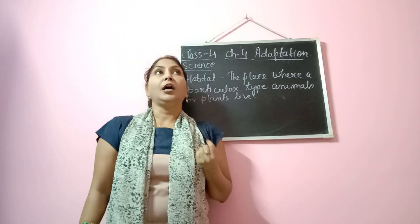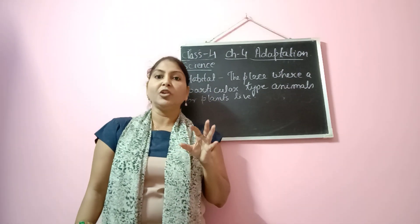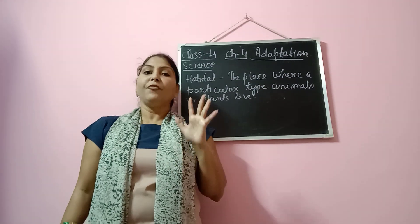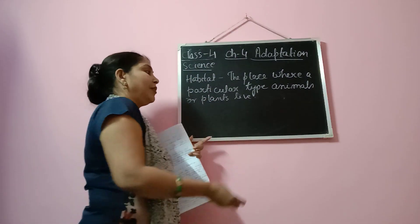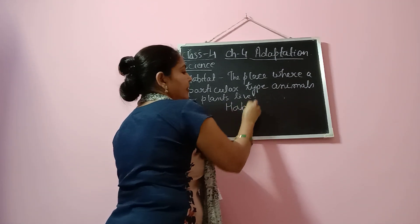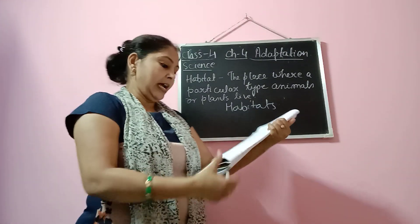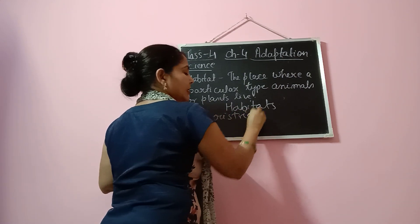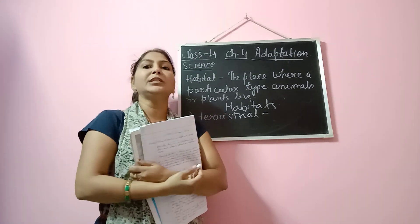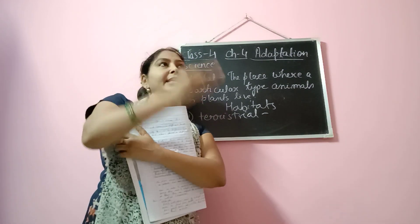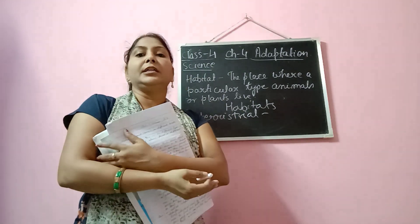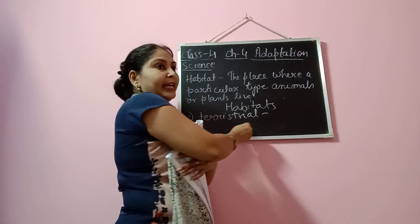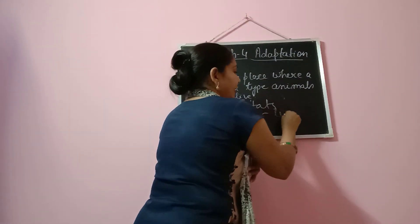Now based on the habitat, since we are learning about adaptation of animals, all these animals are basically grouped under four types of habitat. The first one is terrestrial habitat. Terrestrial habitat means those animals which live on land. We will be discussing this entire topic in the next class in more detail. So terrestrial animals means animals which live on land.